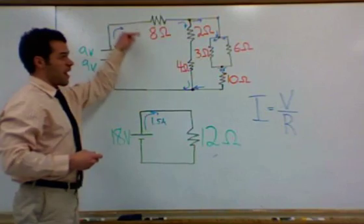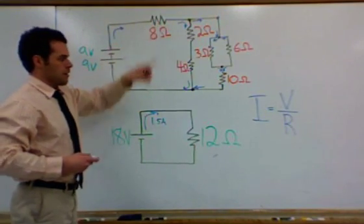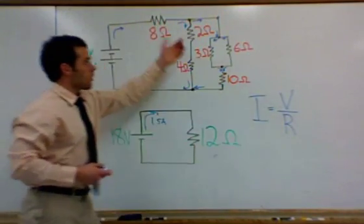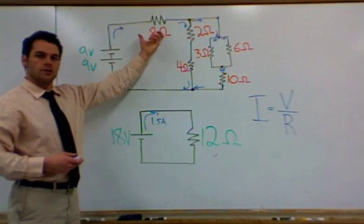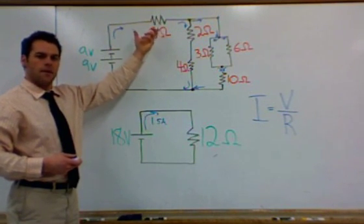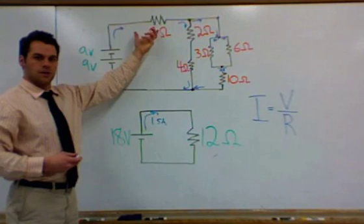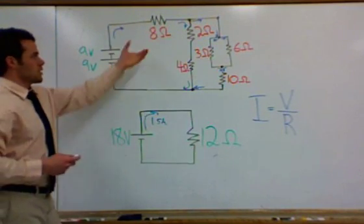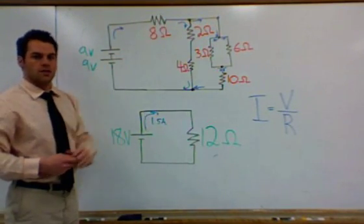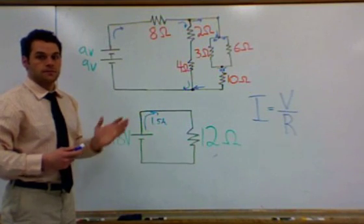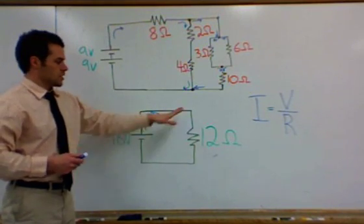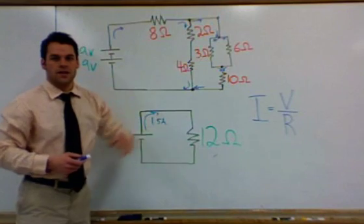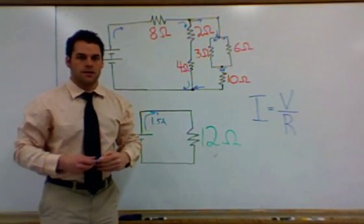If we know that we have 1.5 amps going through here, we can rearrange this to solve for the voltage drop across this 8 ohm resistor here. So we have 12 volts across there. That would leave a certain amount of voltage to go across these other two branches here. That's for you to figure out tonight.